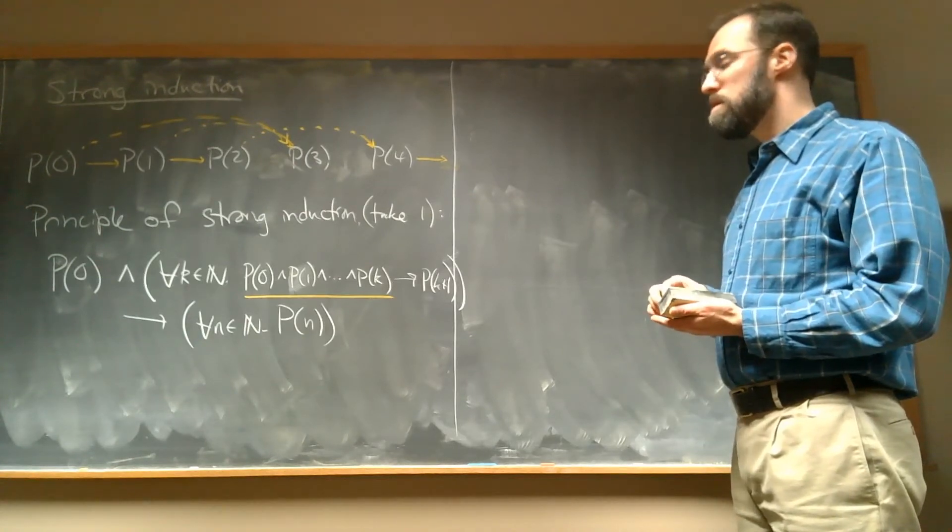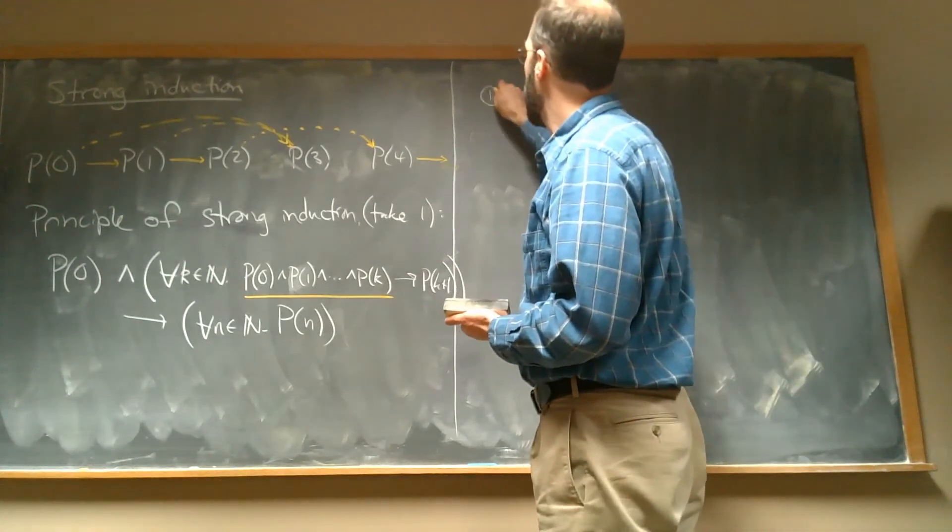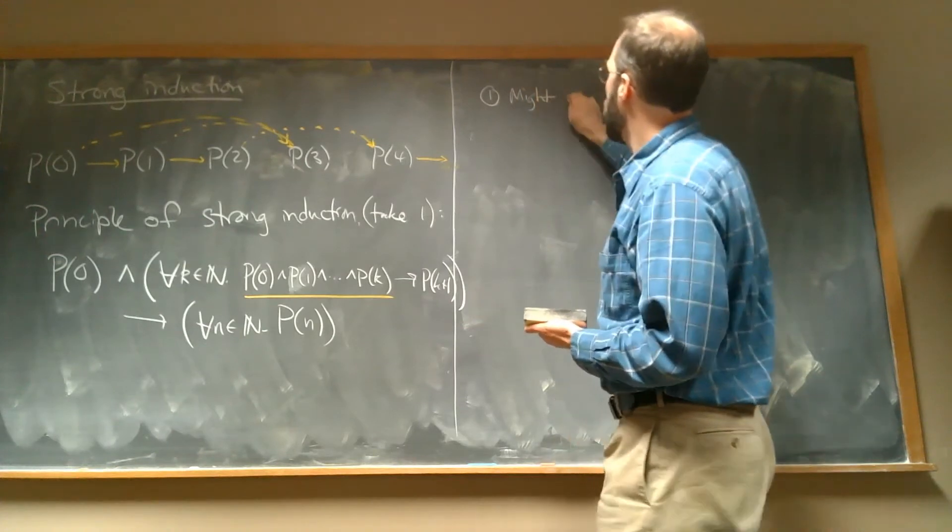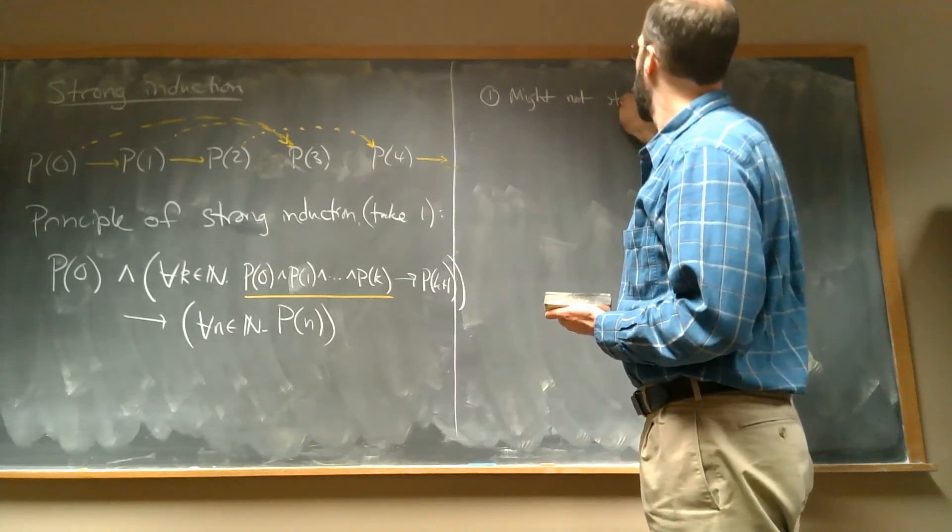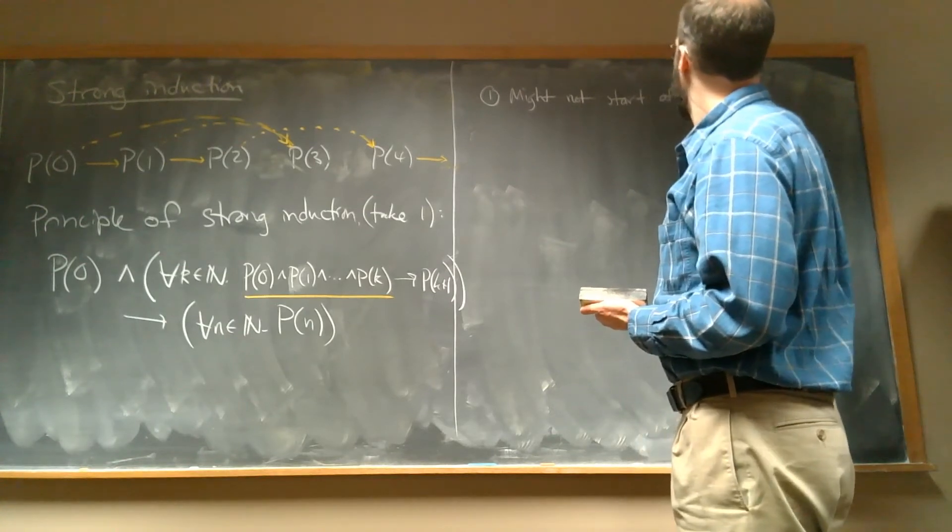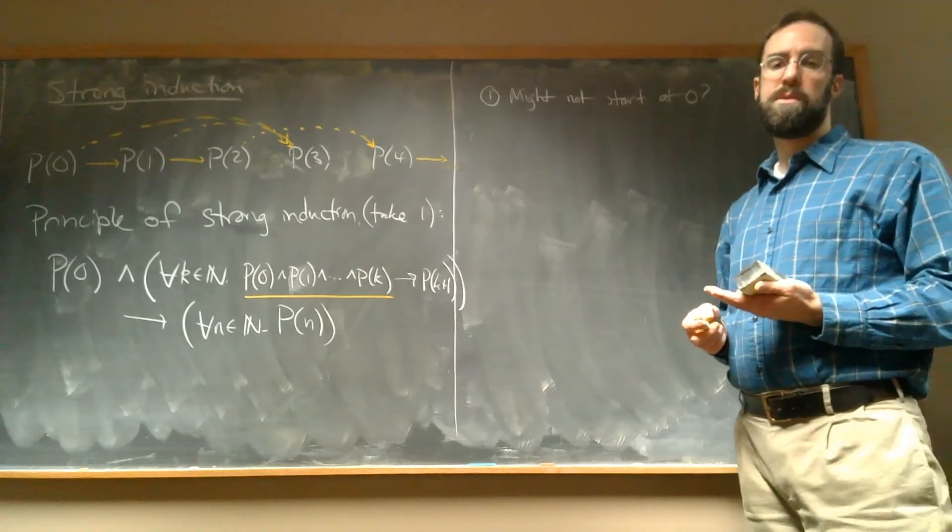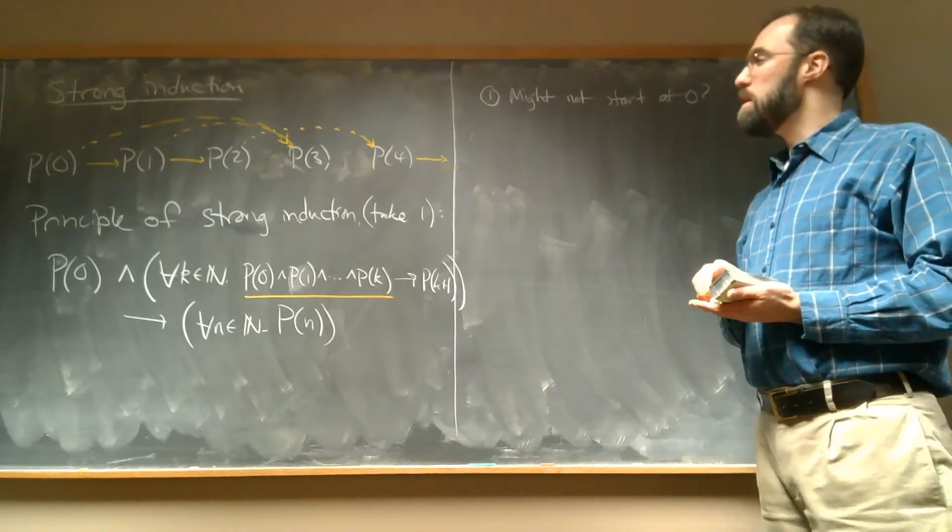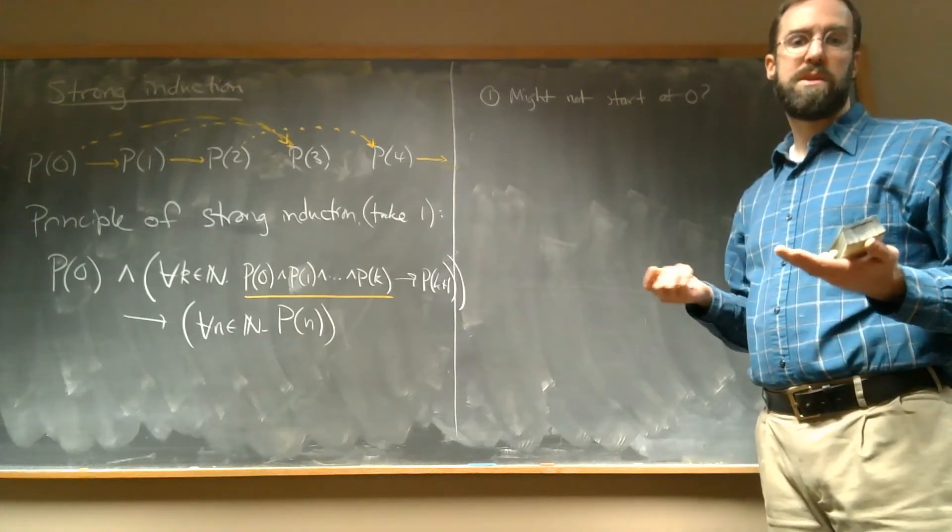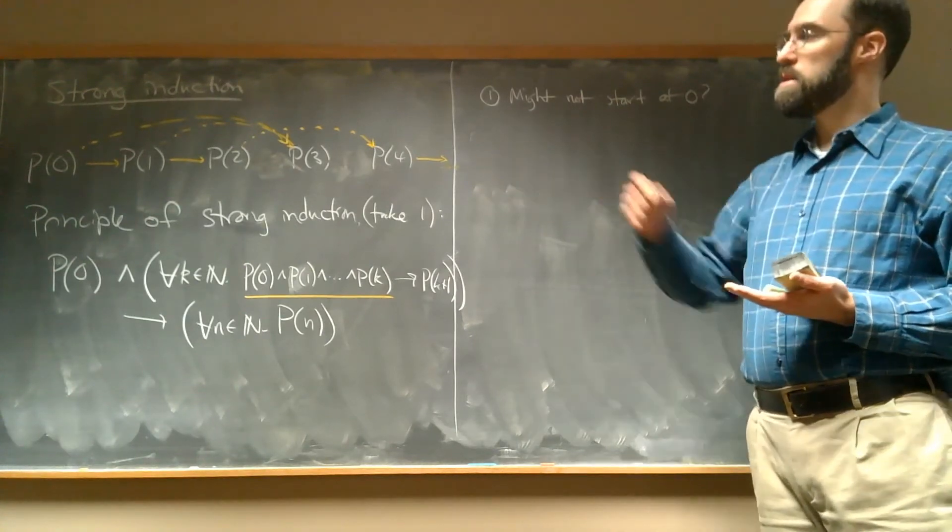So there's a couple ways we can make this a little more general. So one thing is, we might not start at 0. So we saw in a previous example where we were doing a normal proof by induction, but our base case wasn't 0. Our base case was, I think it was 4 in that case. And we can do the same thing here.